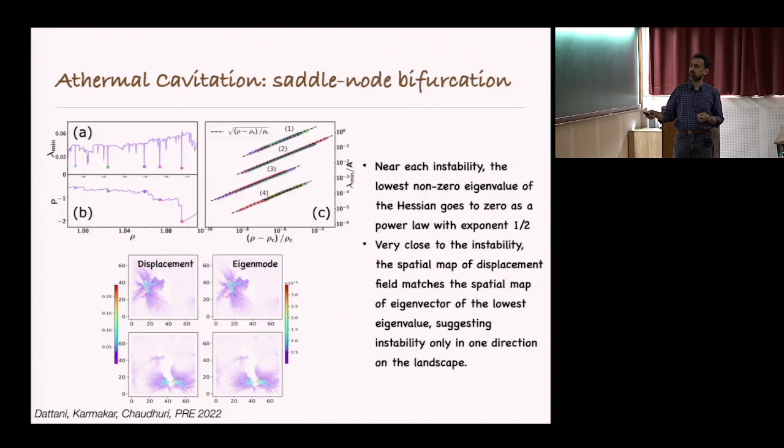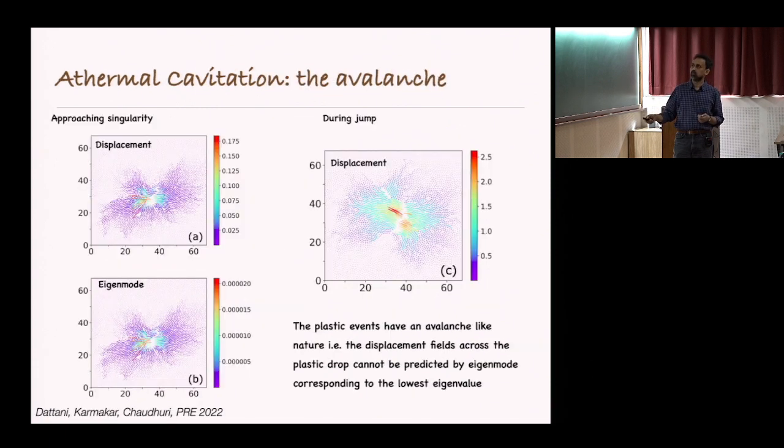However, when the pressure jump happens, the eigenmode will not predict this pressure jump or the displacement field that emerges because it's essentially a cascade of events. This is the event leading towards the singularity, and this is the event that happens at the pressure jump, which is a cascade of such plastic events happening.